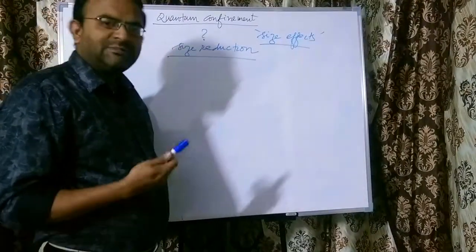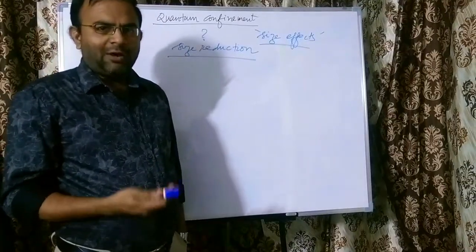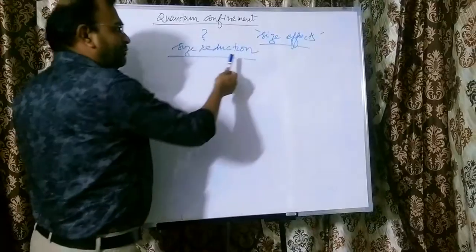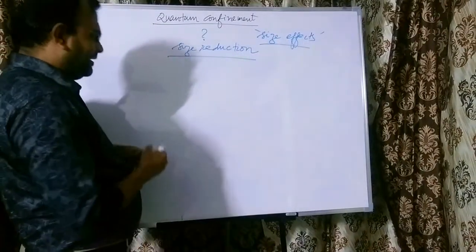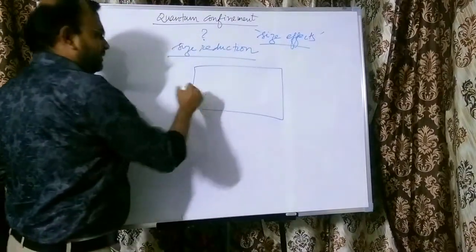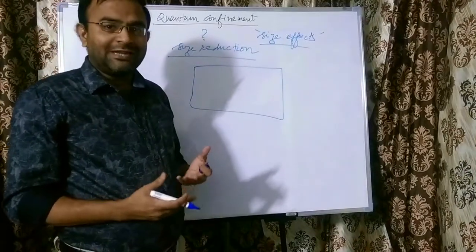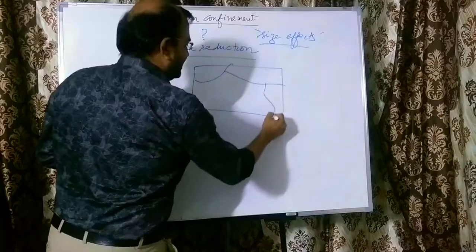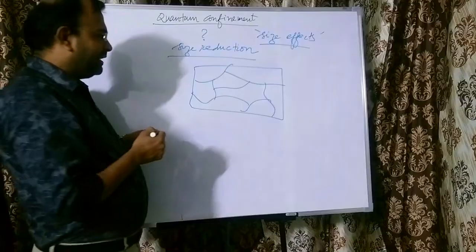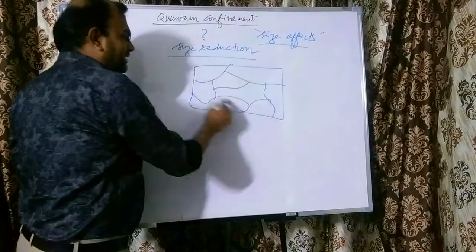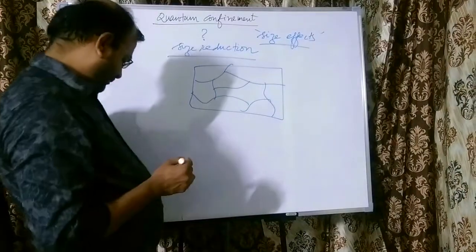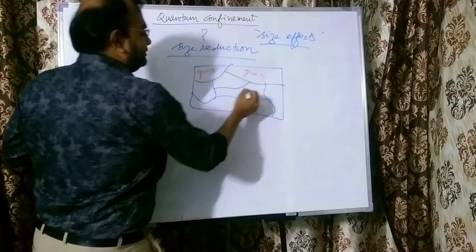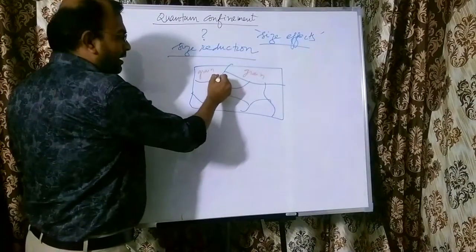Now, what is the difference between a bulk material and a nanomaterial, and why is quantum confinement effective only in nanomaterials which have reduced size? In a bulk solid, generally the material is going to be a polycrystalline material — that is, it is going to have what is called a grain structure. Pictorially, the grain structure can be depicted like this. Each region of this bulk material is a grain, and the bulk material is composed of several grains separated by what are called grain boundaries.